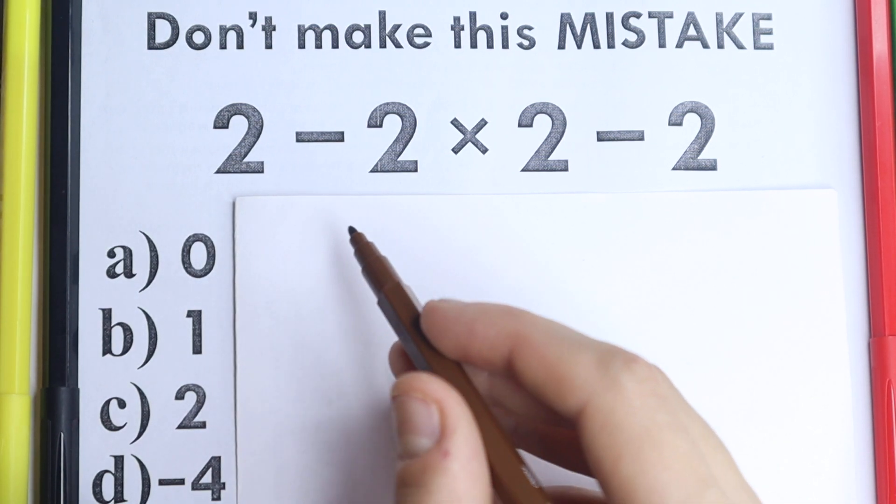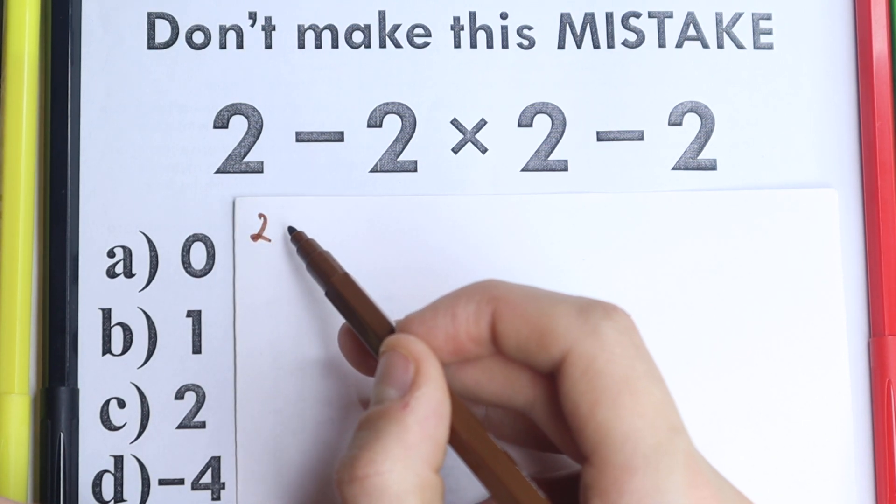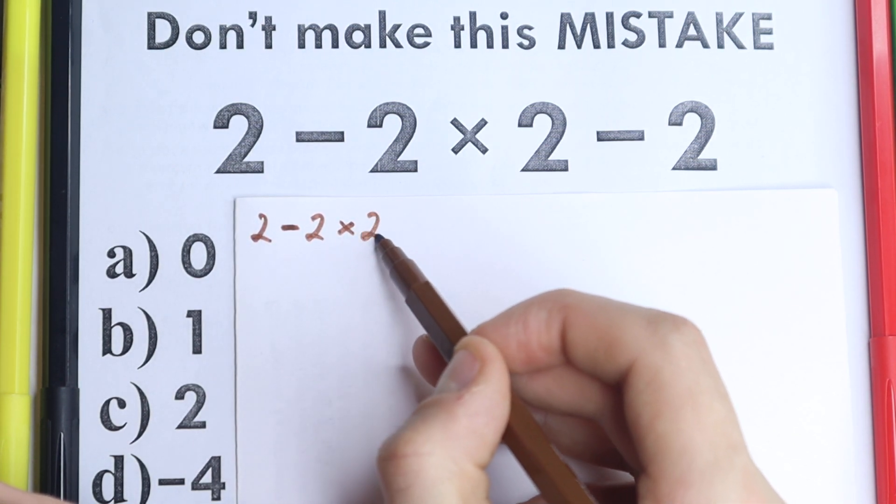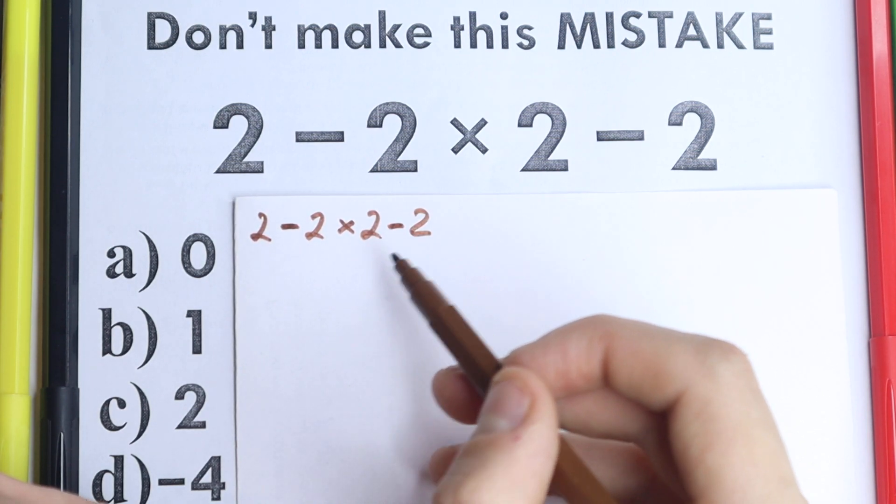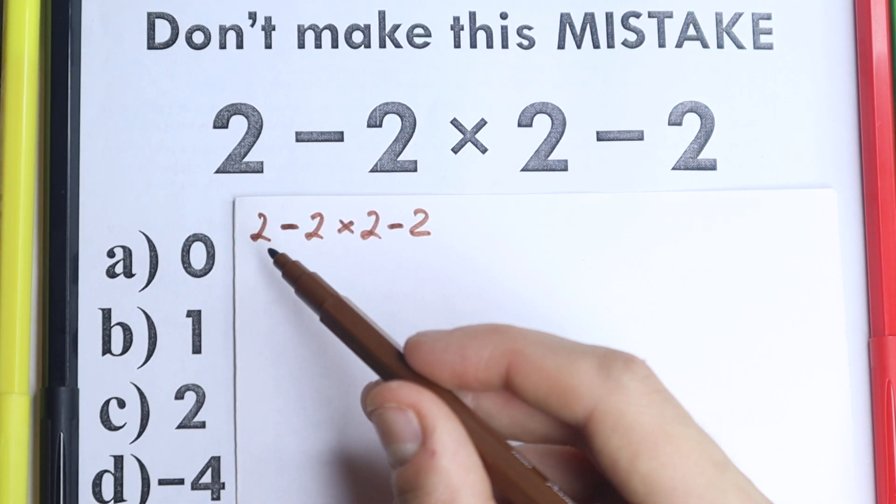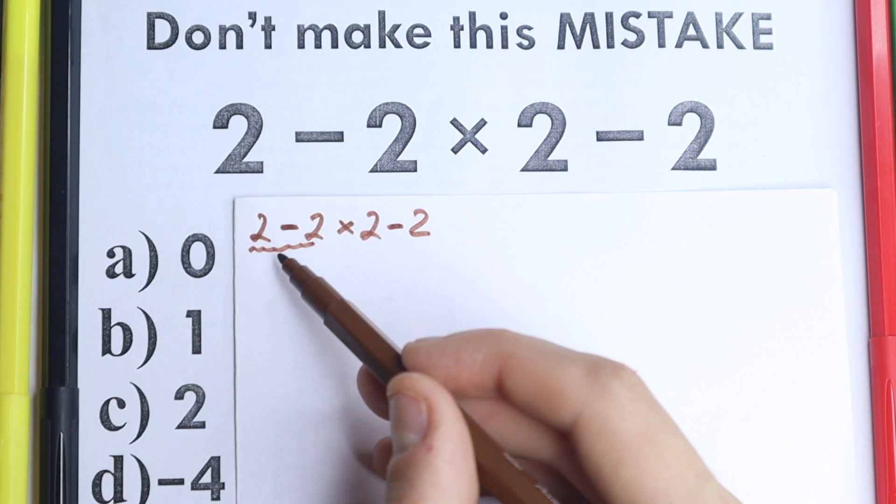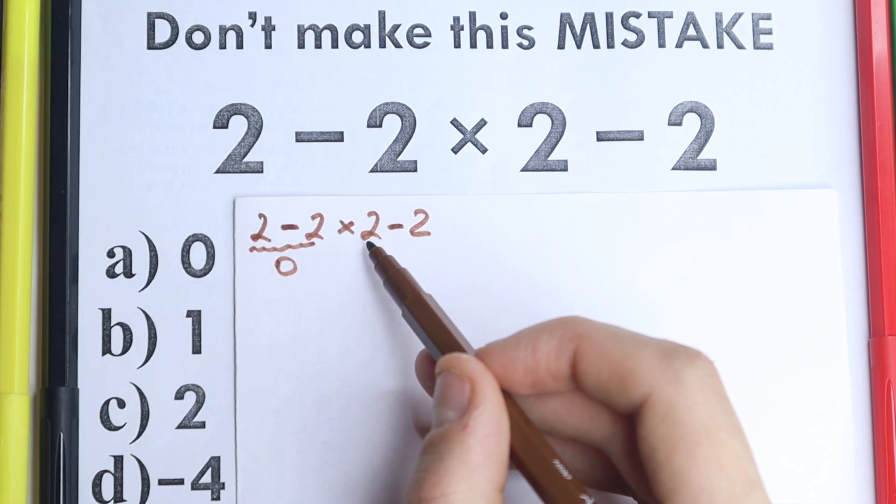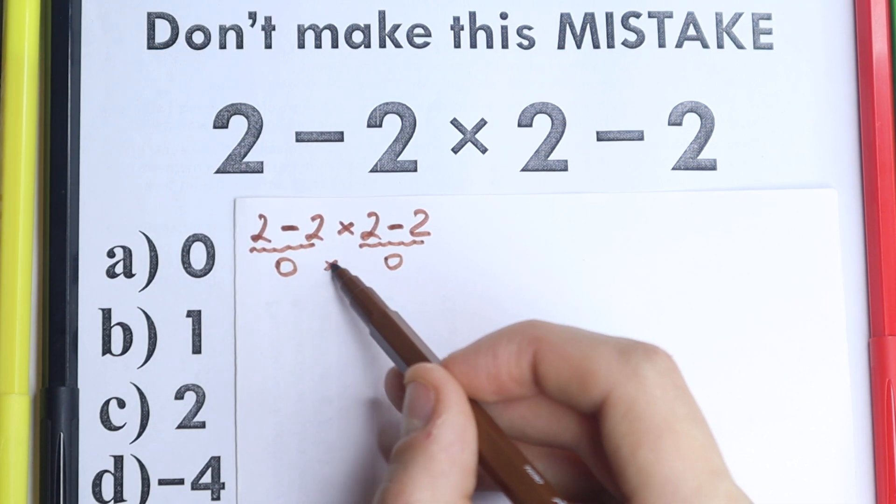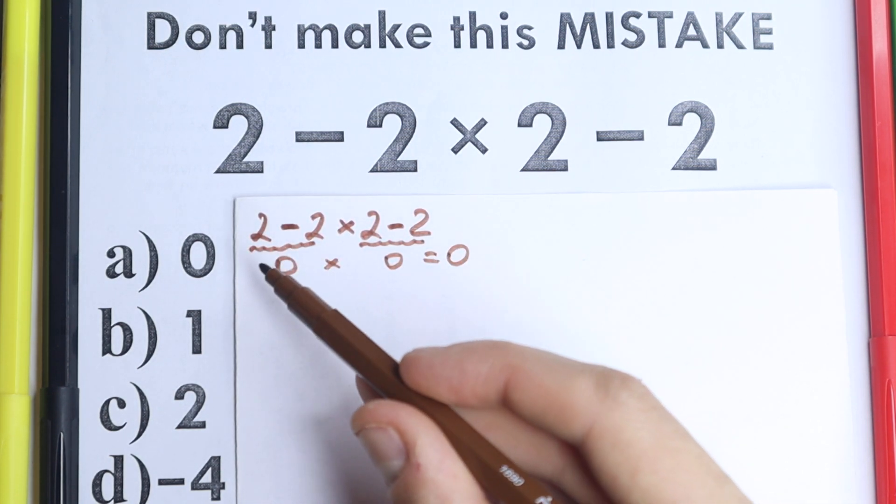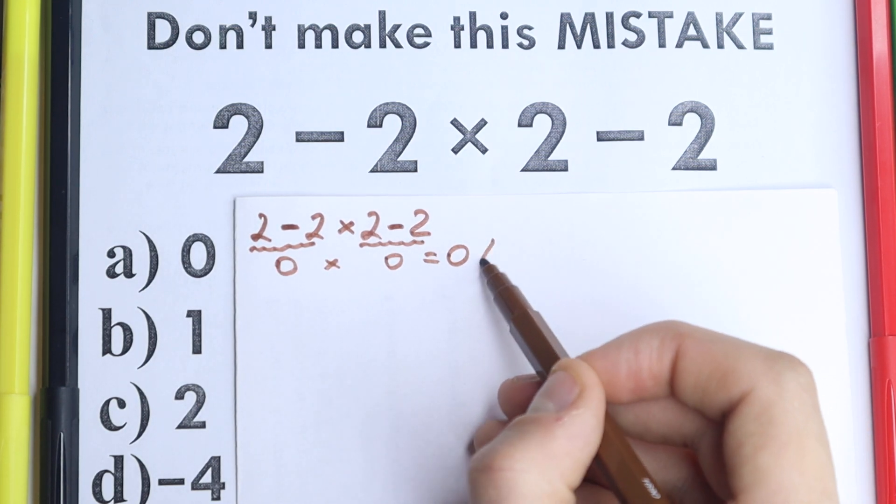So here is our question and right now I'm going to start with this solution. I'm not going to tell that this is correct or incorrect, I just want to show you this solution. So we have 2-2 and one part of students say okay 2-2 equal to 0, then 2-2 equal to 0 as well, so 0 times 0 equal to 0 and we have this option, this is option A.